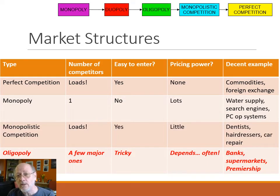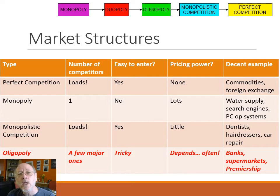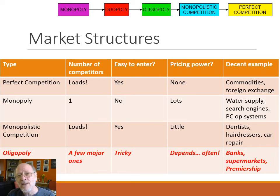The most important market structure is oligopoly. In an oligopoly, there are only a few players in the market that really matter. If we take groceries, within a mile of where you live there will be loads of places to buy groceries, but there are only four that really matter: Tesco, Sainsbury's, Asda, and Morrisons — though you might include Lidl, Aldi, the Co-op, Waitrose, or Marks and Spencer. A relatively small number of players dominate that market, which means entry is tricky. It might be relatively easy to set up as a grocer, but it's going to be very, very difficult to compete with one of those big players.